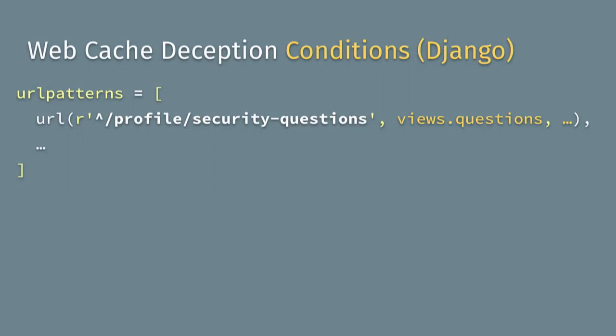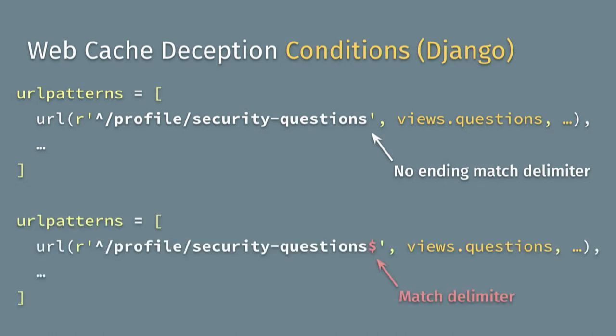Why is this bug even possible? Why does the application send back a 200 OK to /profile/security-questions/a.jpg? For example, in Django — a Python framework that uses regular expressions for URL routing — you have your caret, your actual endpoint, and the handler. The problem is there's no ending match delimiter, so anything appended still matches. You just need to add an end delimiter and /a.jpg no longer matches. It's a very easy fix.